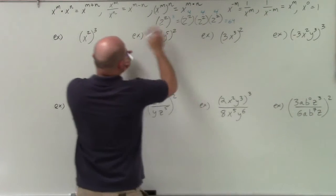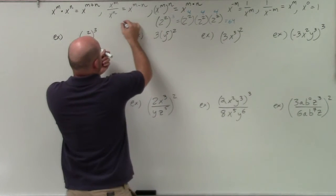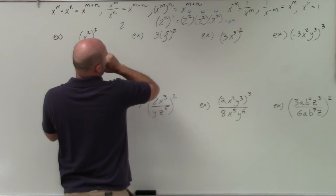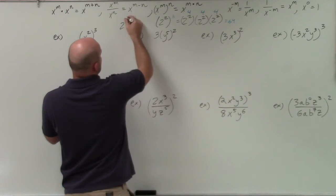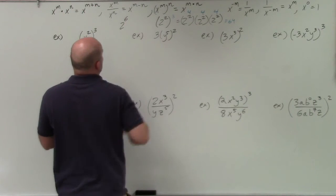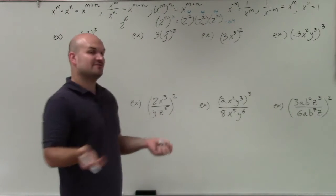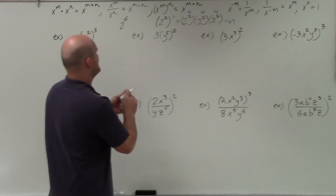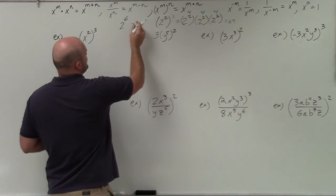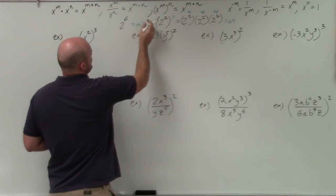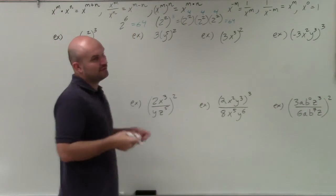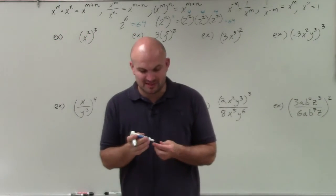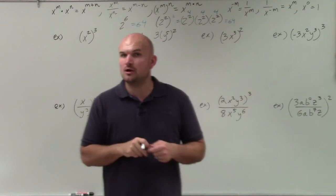If you follow the power rule, that's 2 to the sixth power. 2 to the fifth power is 32, and 2 to the sixth power is equal to 64. So you can see, using some simple numbers, that the power rule works.